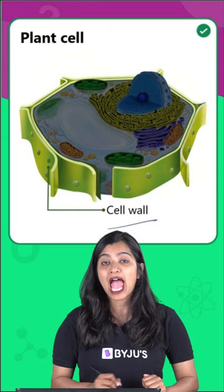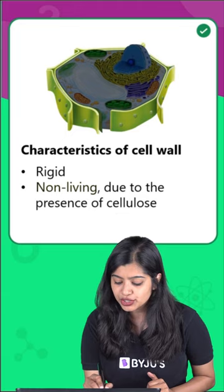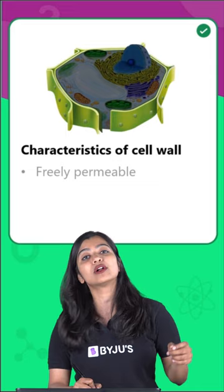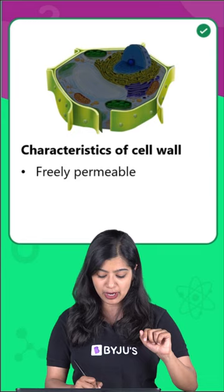When we talk about its characteristics, we know that it is rigid and non-living due to the presence of cellulose, which is a complex carbohydrate. Apart from this, we also see that the cell wall is freely permeable, unlike the cell membrane that is selectively permeable.